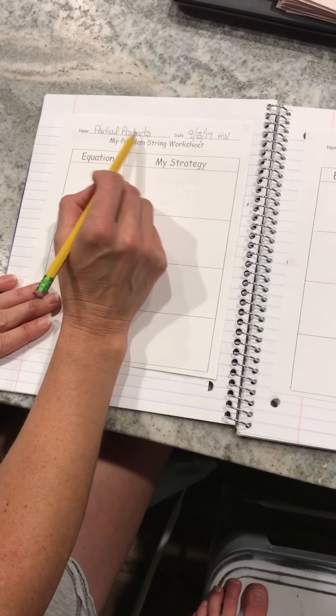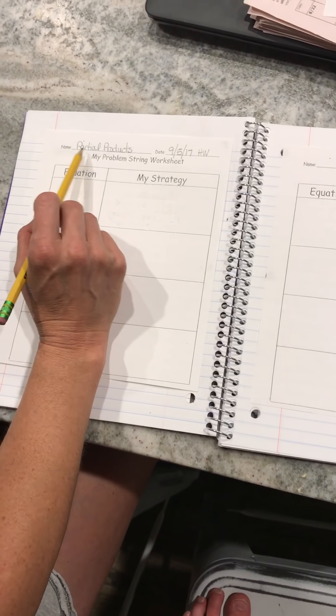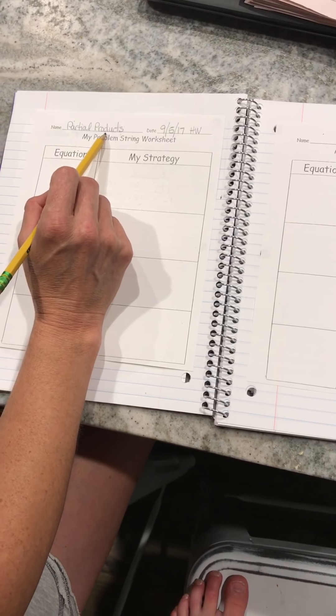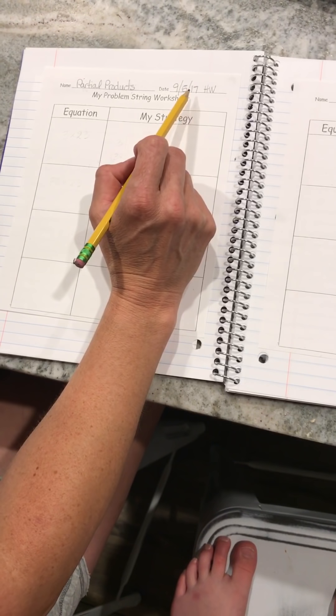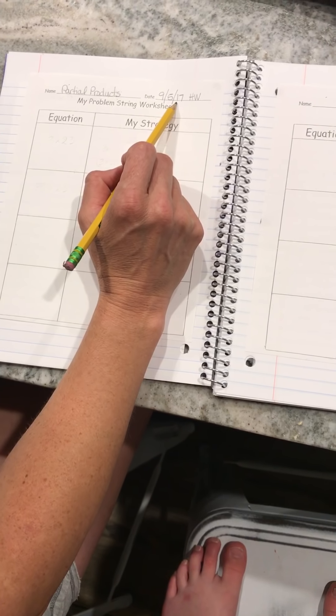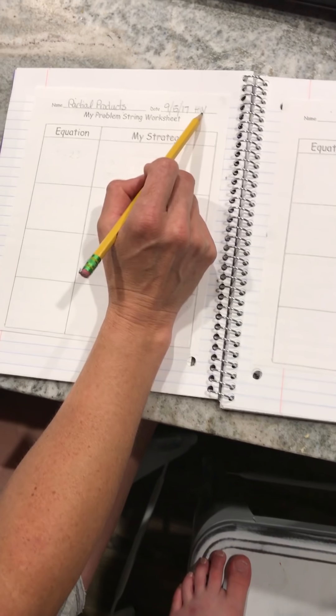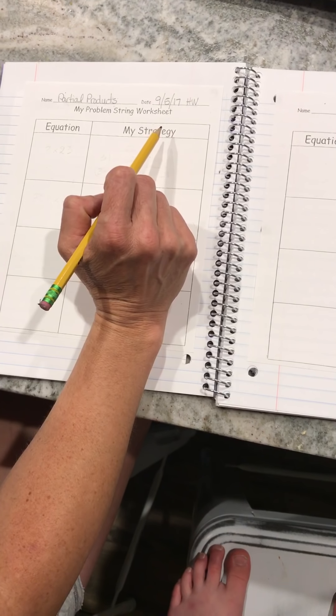Today's problem string is called partial products. Make sure you write the name partial products at the top of your problem string worksheet. The date is 9-5-17, or whatever date that you are watching this. I wrote an HW because I assigned it for homework.